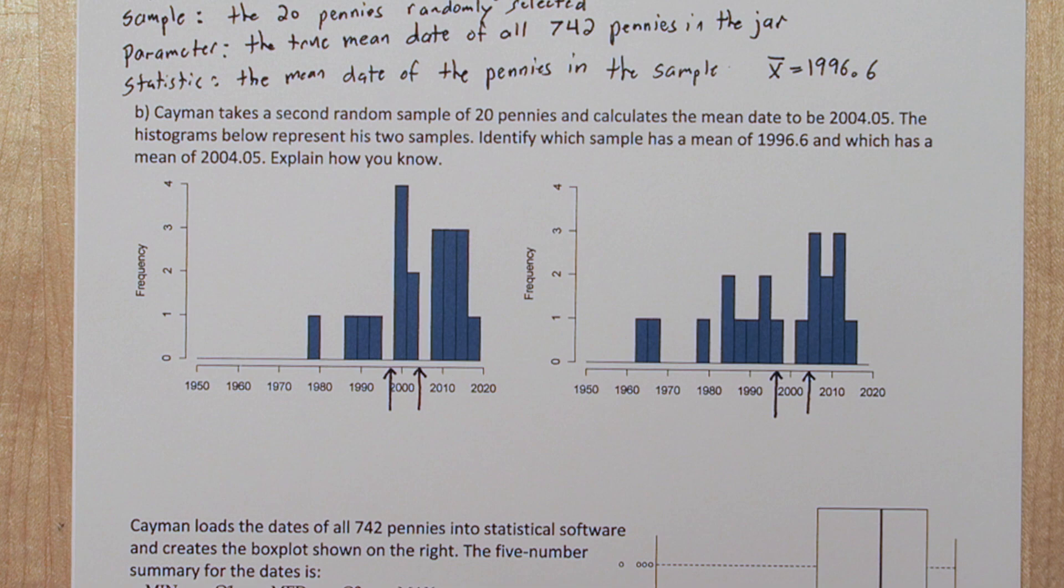The mean is the balancing point of the distribution, so if you picture these as physical shapes, where would they actually balance?